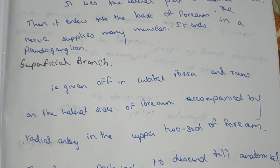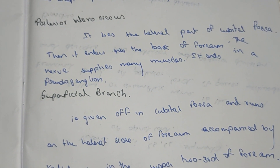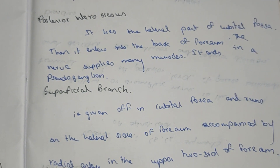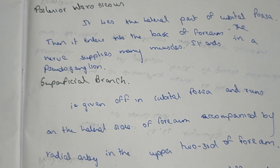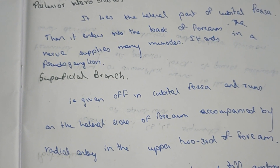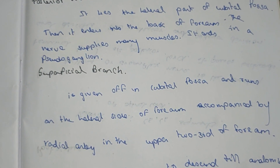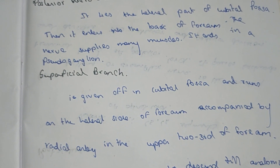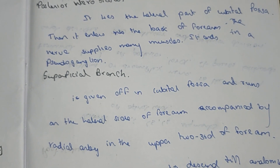So those are the two supplies of the radial nerve: the deep branch and the superficial branch. Thank you. If you like this video, please like, share, and subscribe to my YouTube channel. If you have any doubts, comment below. For more videos, please do subscribe. Thank you.